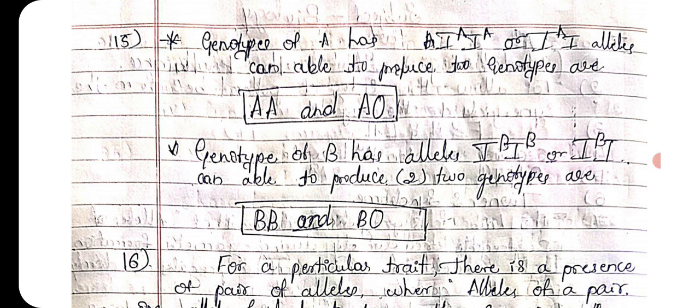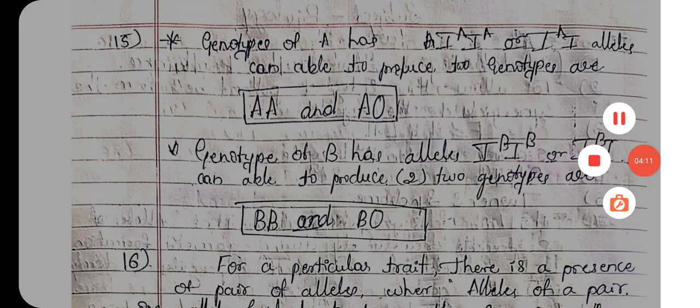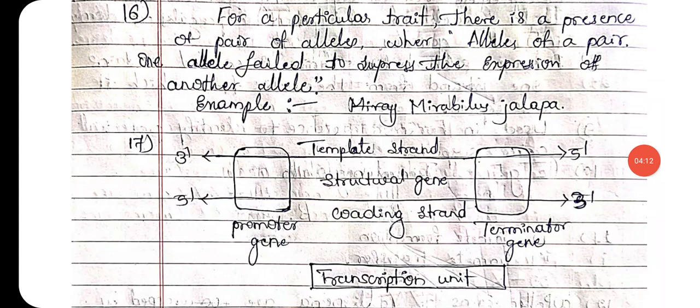Fifteenth one: the possible genotypes of blood group A and B. Blood group A is of type AA and AO, and blood group B is of type BB and BO. Sixteenth one: the definition of incomplete dominance.